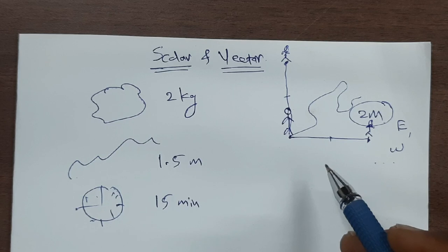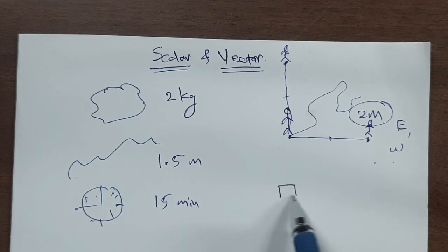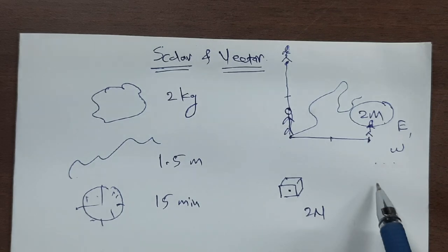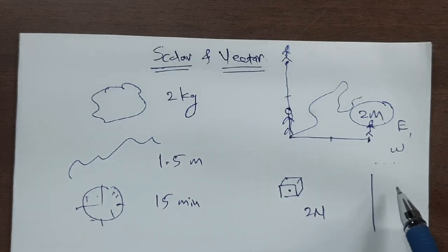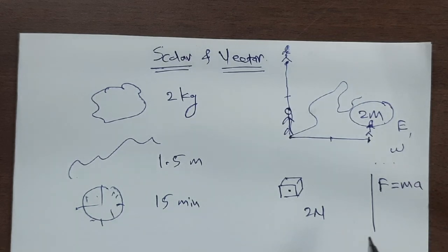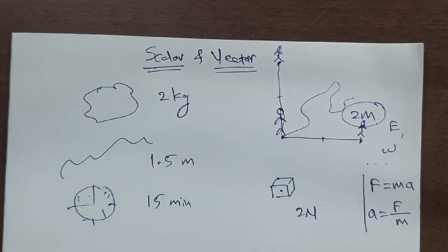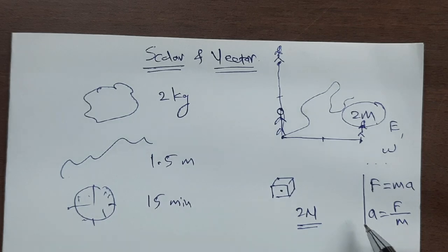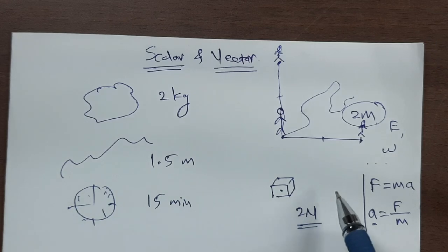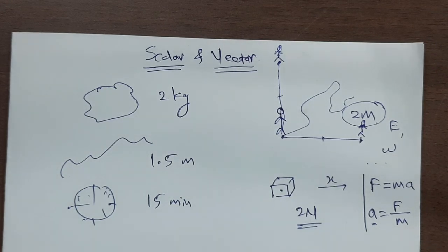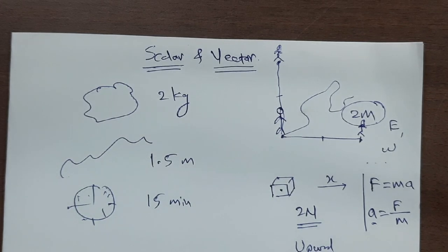Similarly, if I apply a force of 2 newtons on an object, what will be the acceleration? From Newton's second law, the simplified form is force equals mass times acceleration, so acceleration equals F upon m. But if I ask for the acceleration, the magnitude of 2 newtons alone is not sufficient — you need the direction. If a particle is accelerating at 1 meter per second squared, that is not sufficient; it needs a direction, such as along the x-axis or in the upward direction. This is important.